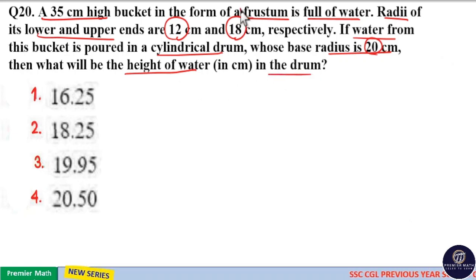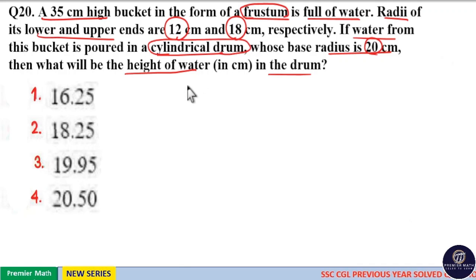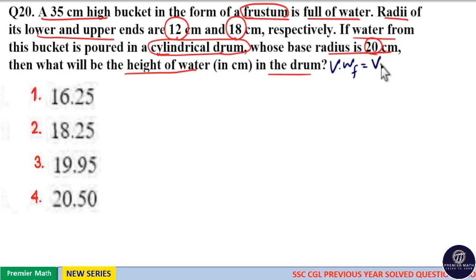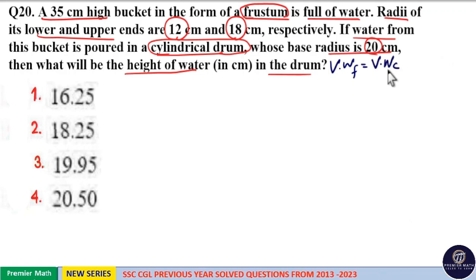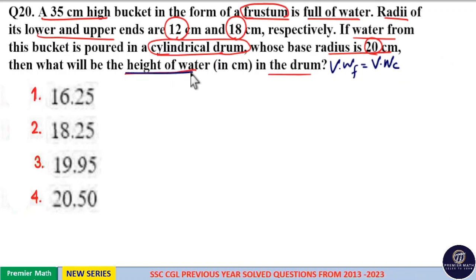When you pour water from this frustum to the cylindrical drum, the volume in both cases is equal. That is, just equate the volume of water in the frustum to the volume of water in the cylindrical drum. When you equate these volumes, you will get the height of water in the drum.